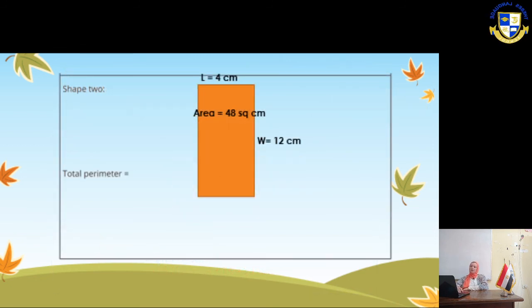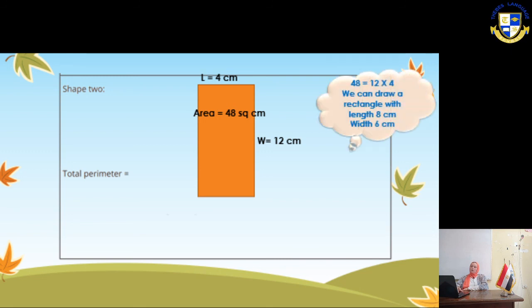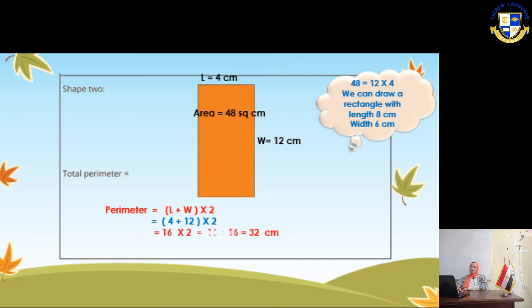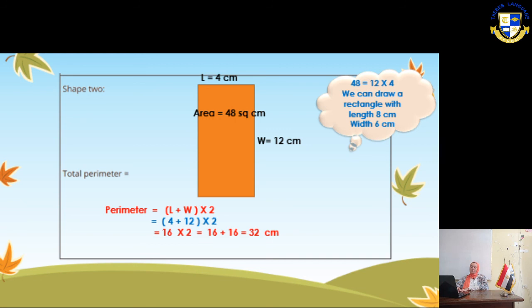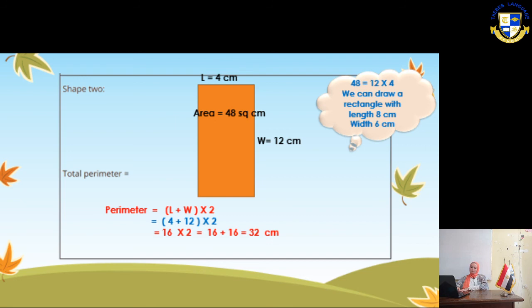Shape number 2: draw a rectangle with length 12 and width 4, because 12 × 4 = 48. To find the perimeter: (12 + 4) × 2 = 16 × 2 = 32 cm.